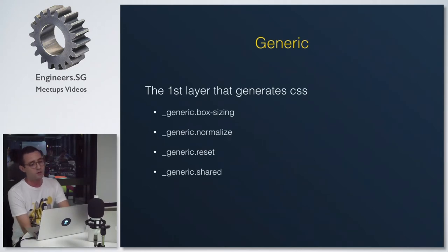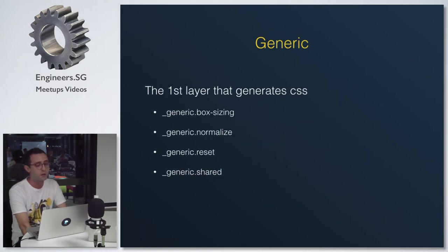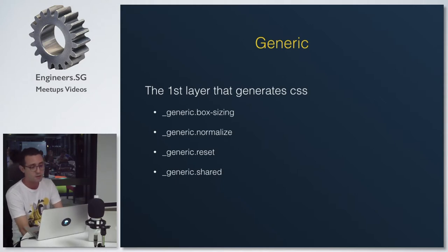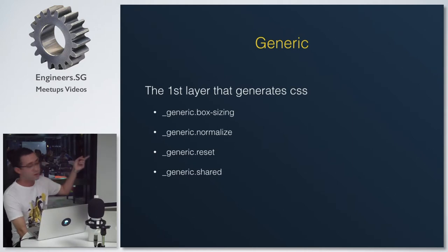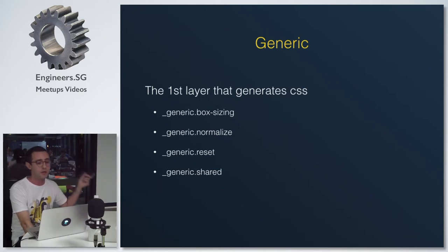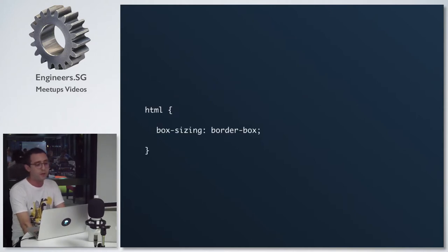Starting with generic. Generic is the first layer that generates CSS. These files can be considered as box-sizing, normalized CSS. All the resets and shared styles fall under the generic category. An example is declaring the HTML box-sizing border-box — this is considered generic.